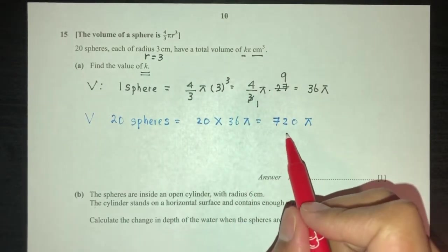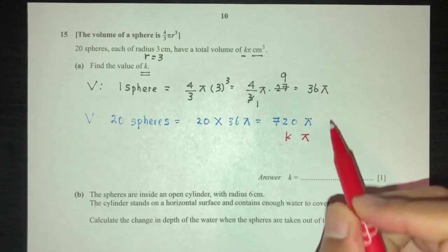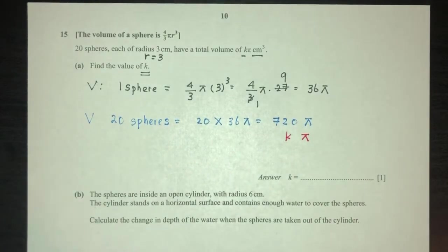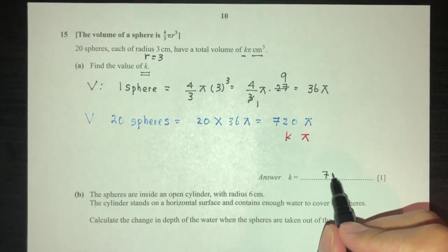Now, comparing with this, it says it is k pi. So, pi is pi, and k will be 720. So, 720 will be your value of k for part 1.